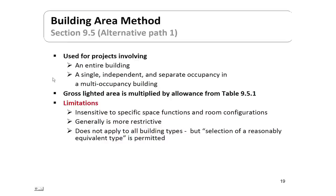The first alternative path is the building area method — the simplest approach but the most insensitive to building details. It is used for the entire building, giving one single number that says a particular building type is allowed so many watts per square foot. The gross lighted area is measured from outside to outside surfaces, so you measure the entire outdoor area of the building footprint multiplied by the number of floors.